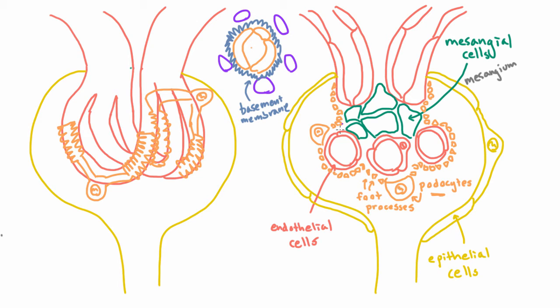And since these podocytes are epithelial cells, well, we're going to have a basement membrane beneath them. And it turns out that this thing is really important, so we actually give it a special name. We don't just call it a basement membrane. We call it a glomerular basement membrane.